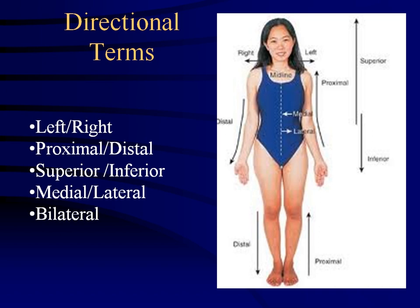If I have a fracture of the arm and I'm trying to describe it — is it proximal or distal? A proximal radial fracture would be up here near the elbow; a distal radial fracture would be down near the wrist. Superior versus inferior: superior is above, inferior is below. So the head is superior to the heart, the stomach is inferior to the heart. For example, the superior vena cava feeds the upper portion; the inferior vena cava comes in from the bottom.